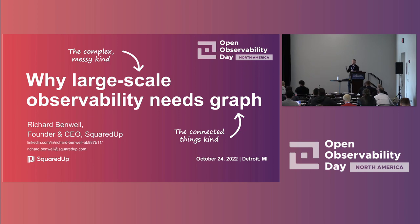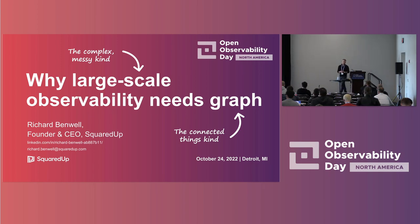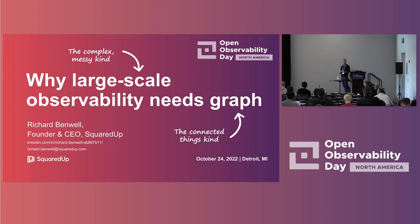By large-scale, I mean not necessarily the volume of data, but the complex, messy kind of systems that we're trying to observe as we scale up our organizations. And by graph, I mean not the line graph type of graph, but the graph of connected things. In this talk, I hope to cover why large-scale observability needs graph, what graph is, how it's used today, and maybe some challenges for adoption going forward.